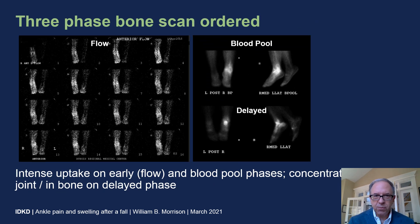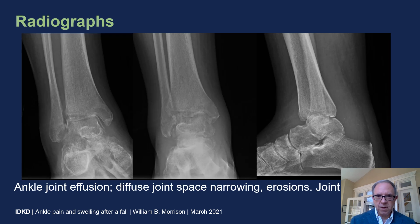A three-phase bone scan was acquired. We see on the early flow phase that there is rapid uptake around the ankle joint. In the blood pool and delayed phase, there is concentration of radiotracer in and around the ankle joint. Radiographs acquired at the time now show diffuse joint space narrowing and erosions as we saw on the MRI.